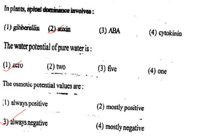Next one: The water potential of pure water is option 1, zero; option 2, two; option 3, five; option 4, one. Answer is option 1: zero.